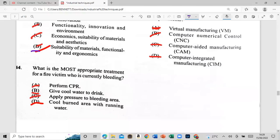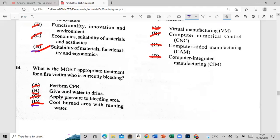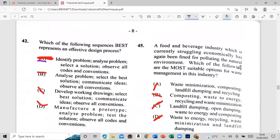All right. So we're on to 44. Let's go. The most appropriate treatment for a fire victim who is currently bleeding. A: perform CPR. Woo! Give cool water to drink. C: apply pressure to the bleeding area. C, D: cool burn area with running water. So, I'm aware that, yeah. So, for the fourth. All right. So let's move on to 45.